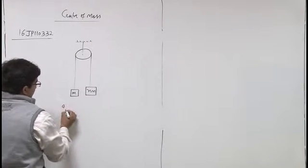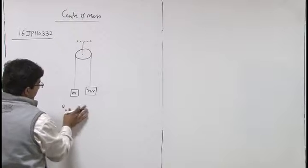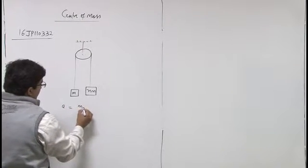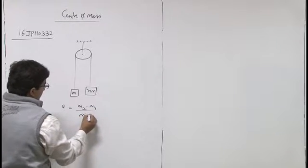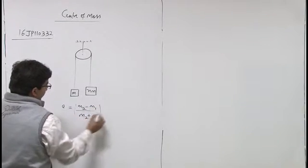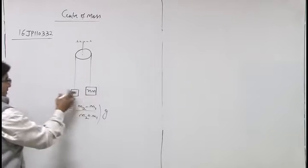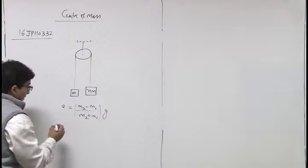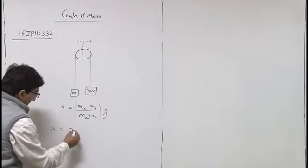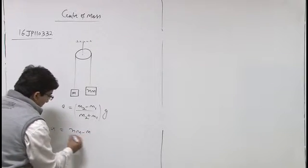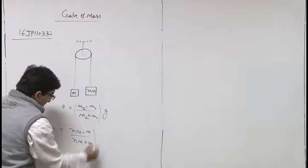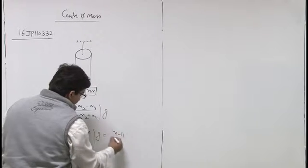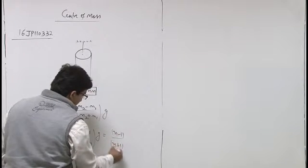This is an Atwood machine. Acceleration of particles a equals m2 minus m1 divided by m2 plus m1 into g. We can calculate by drawing FBD, free body diagram of these two blocks. So a equals nm minus m divided by nm plus m into g. This is n minus 1 upon n plus 1 into g.